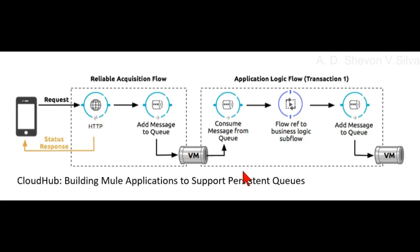The reliable acquisition flow reliably delivers a message from an inbound HTTP connector to an outbound VM endpoint.